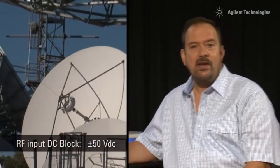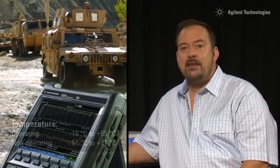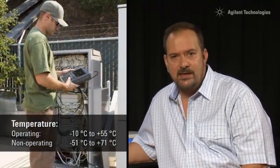The RF input can also handle up to 50 volts of DC, a lifesaver when testing satellite downlinks that have DC power on the center pin of the coax. It conforms to the relevant MIL standards, and incredibly, the FieldFox meets all its specifications over an operating temperature range from minus 10 degrees C to plus 55 degrees C, ideal when working in freezing cold or extremely hot environments.